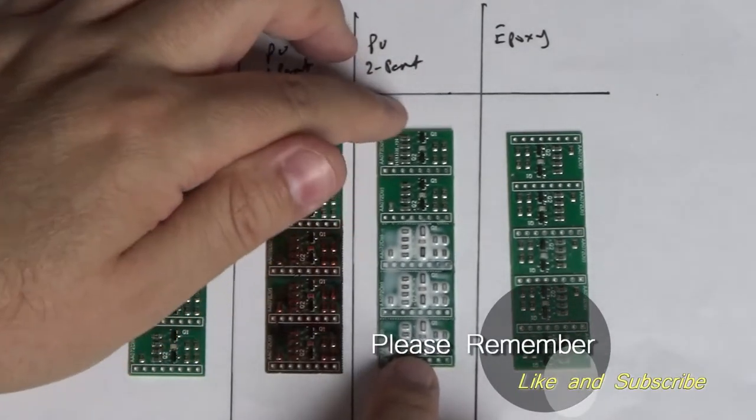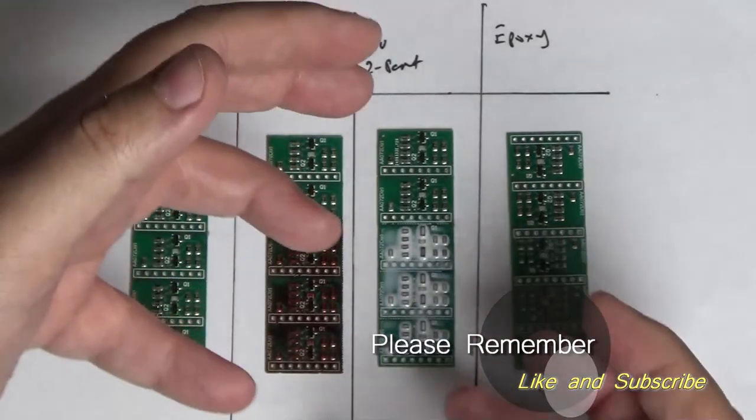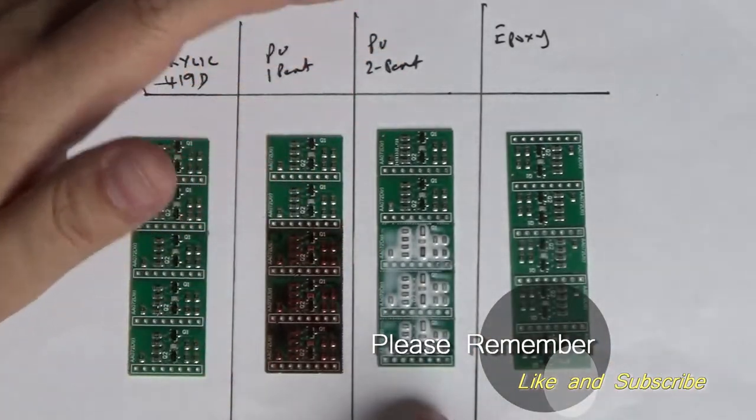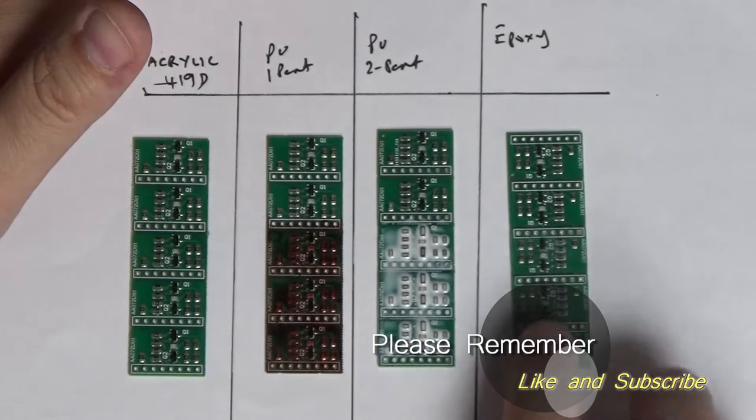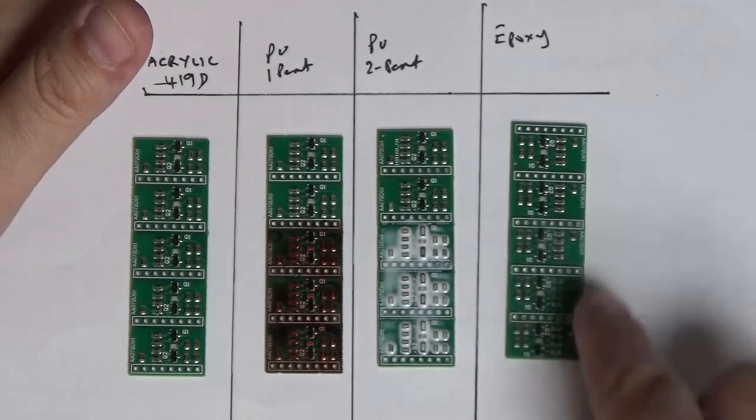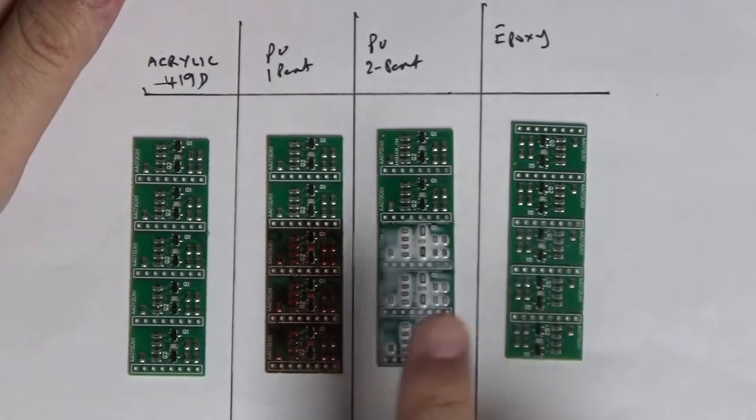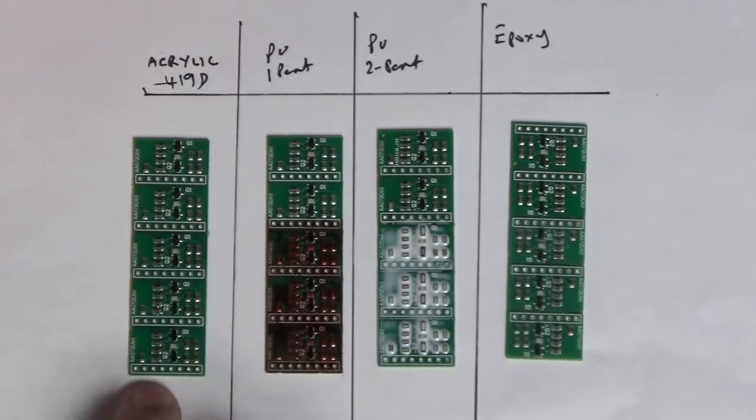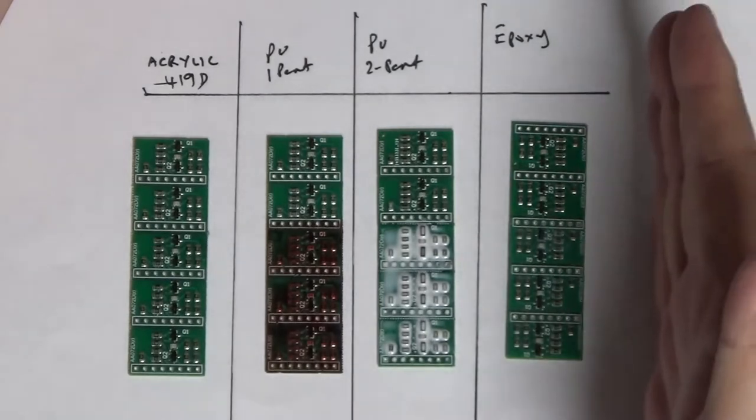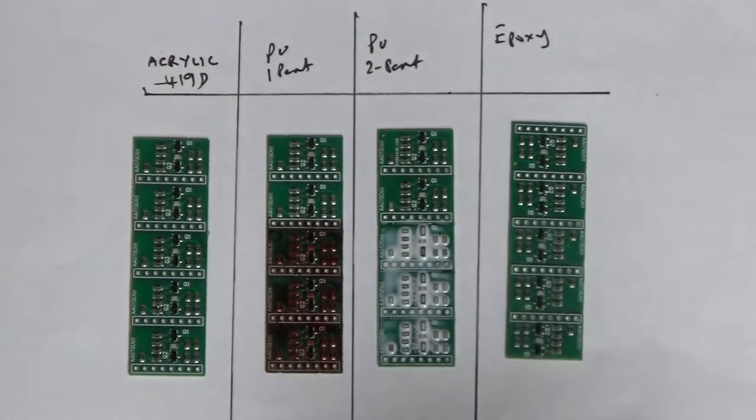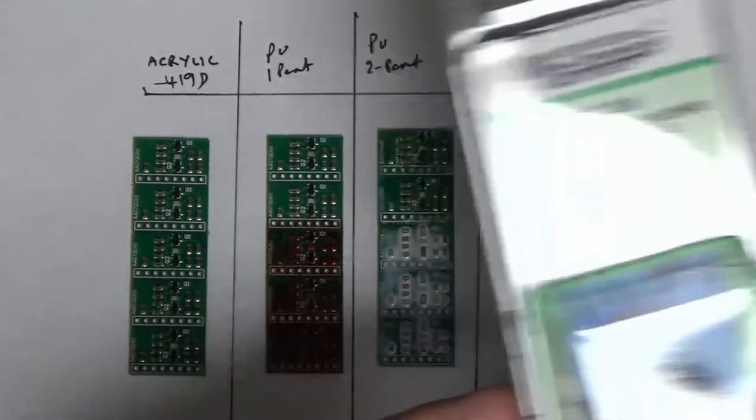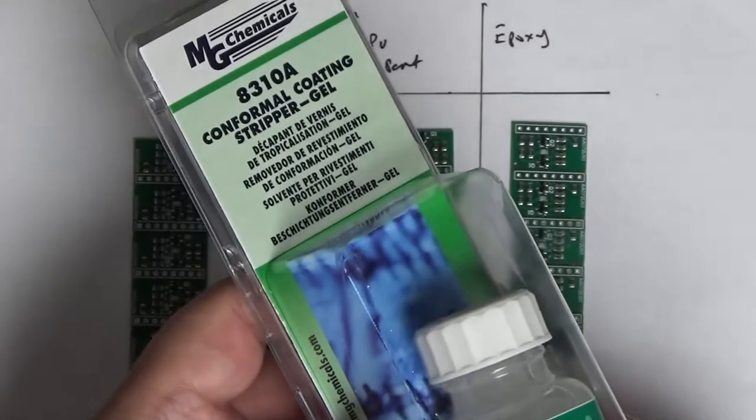The third one is a PU two-part resin and I've added a little bit of white to that just so we can see it a bit more clearly. The first and last ones actually do have a UV indicator but I'm not messing around with UV lamps and things for this video. So last up we've got the epoxy. This is a two-part epoxy and it's been applied by brush. So we've got epoxy, PU two-part, PU one-part and an acrylic. So unfortunately no silicone and no Parylene or anything like that, but this should be enough to give us a good indication I think of the success or failure of the remover chemical. Okay, so here is the chemical that I'm going to try.